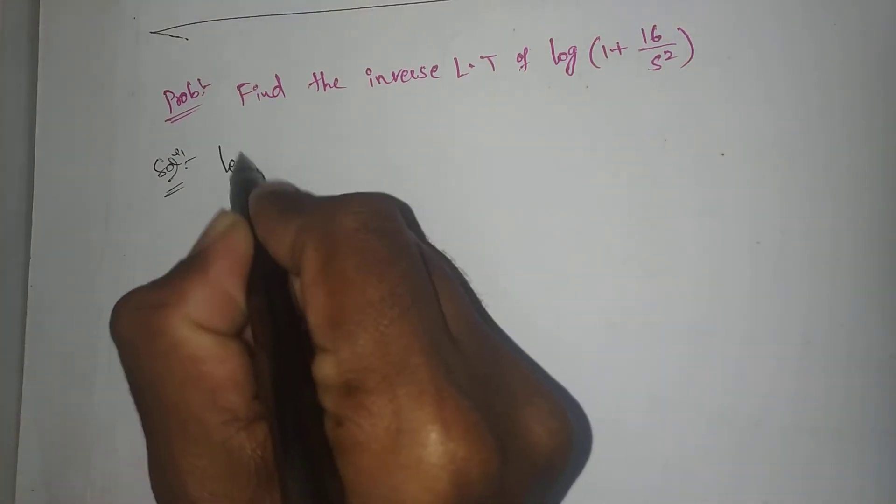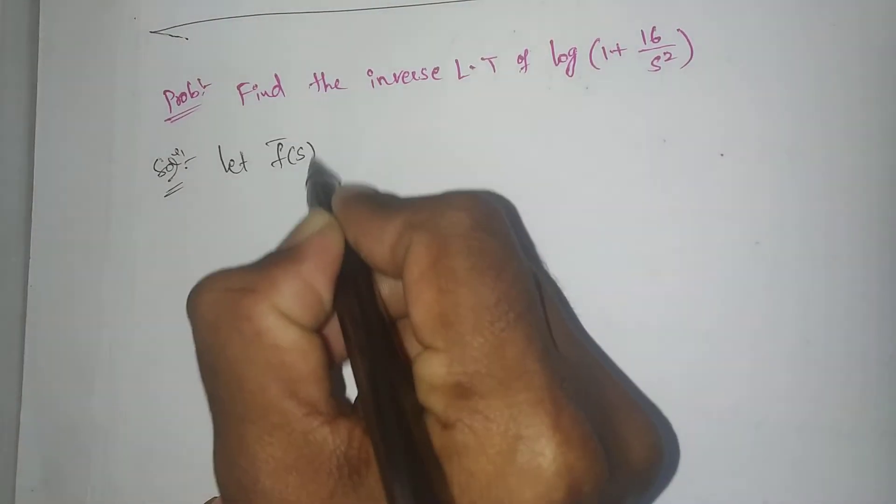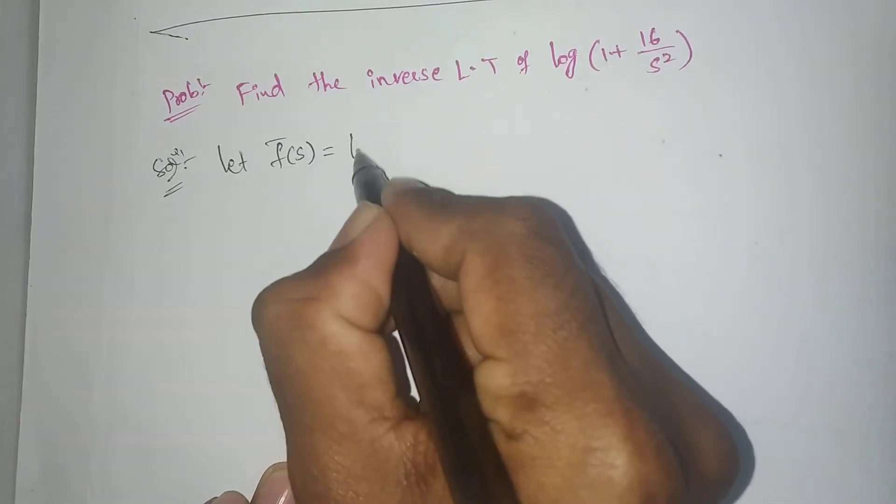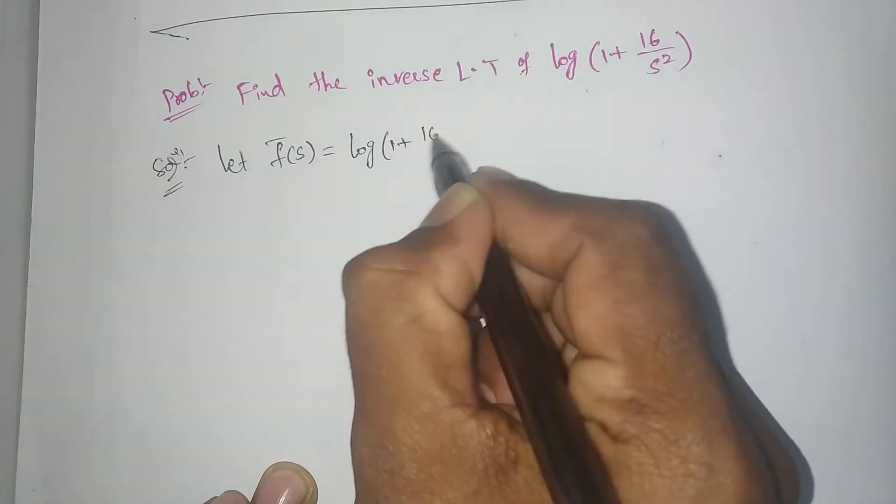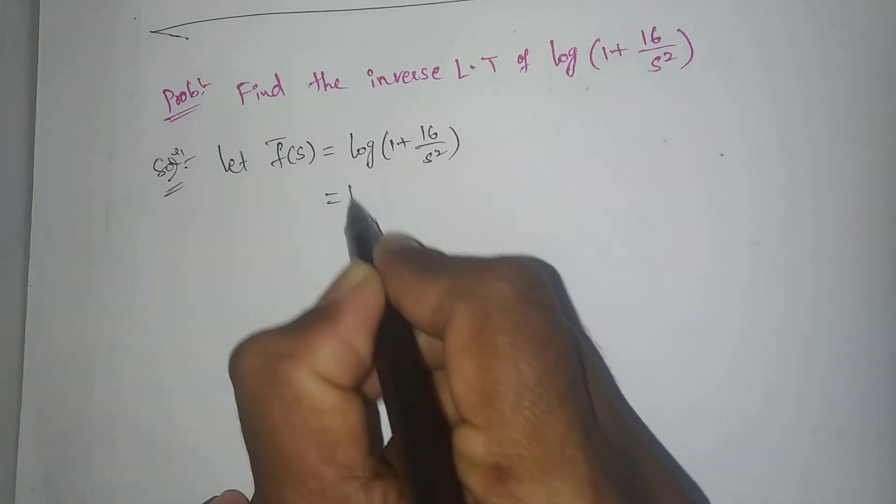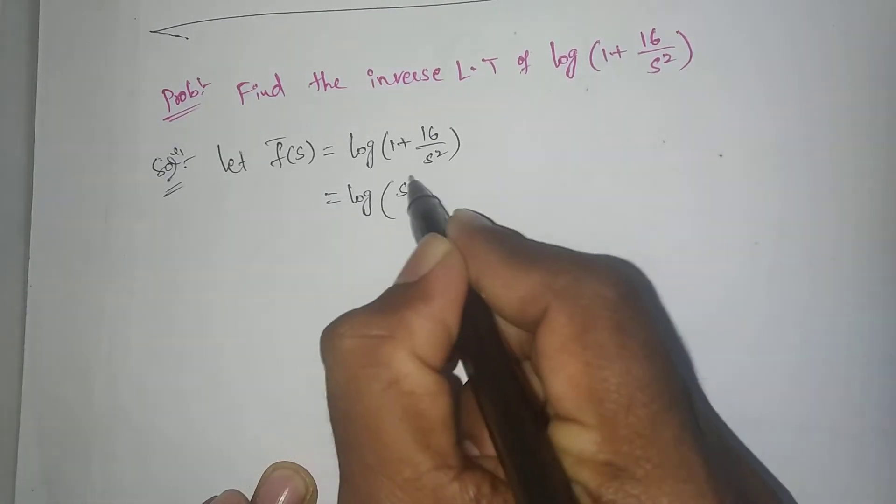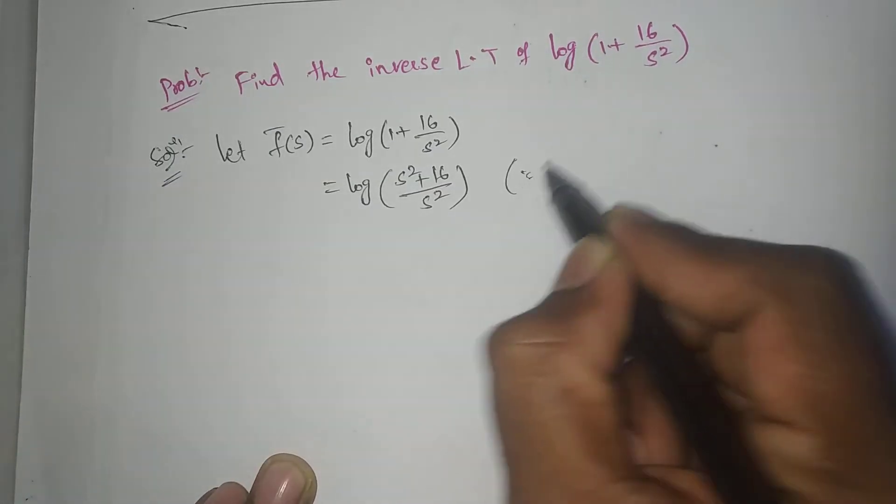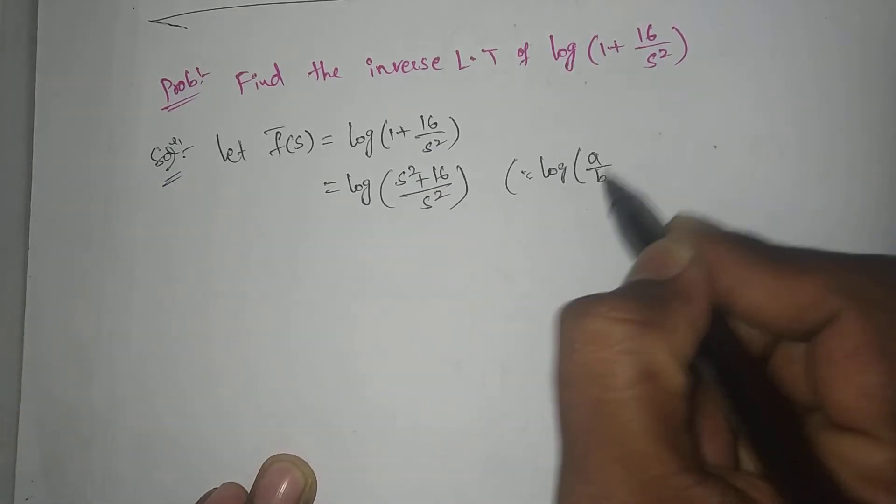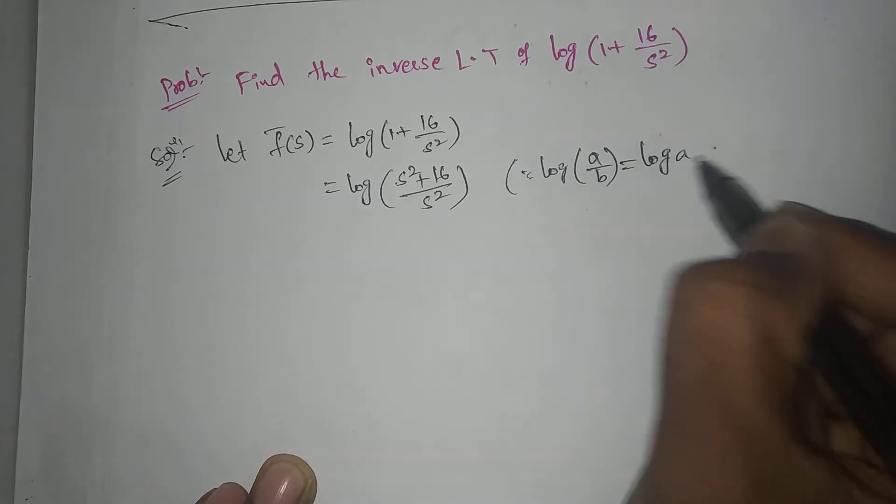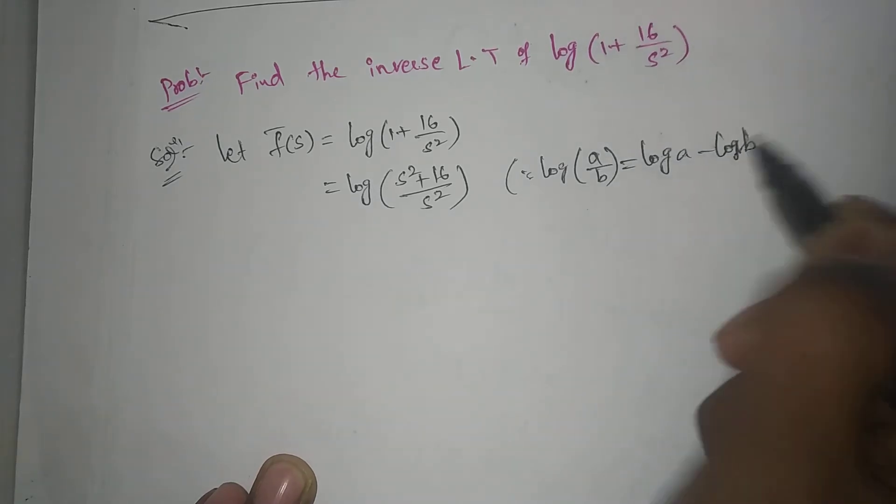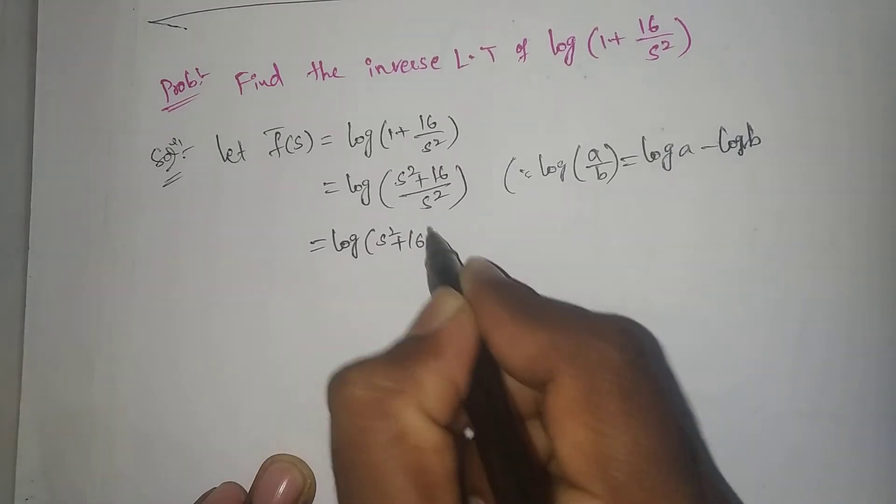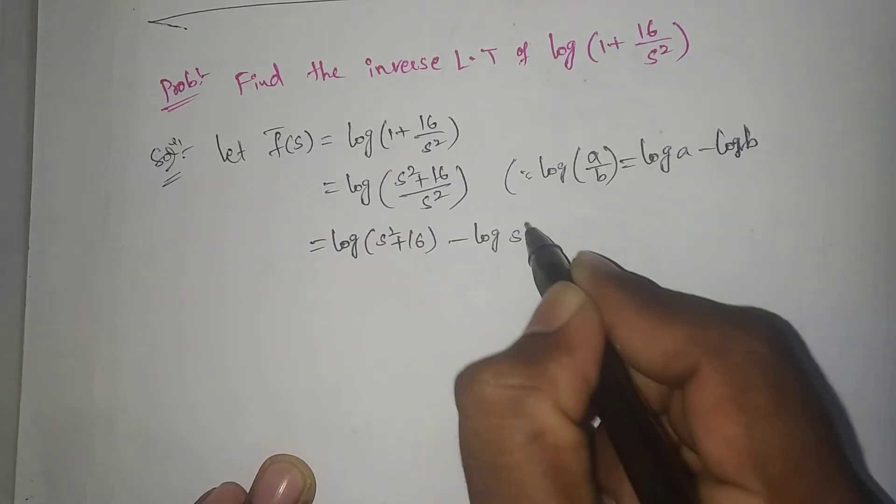Solution: let f̄(s) = log(1 + 16/s²) = log((s² + 16)/s²). Using the formula log(a/b) = log(a) - log(b), we get log(s² + 16) - log(s²).